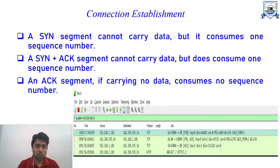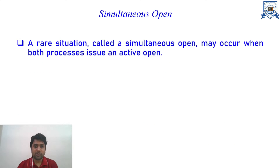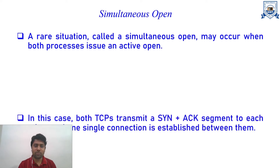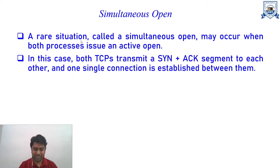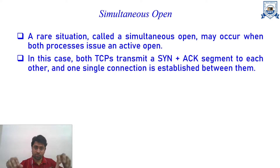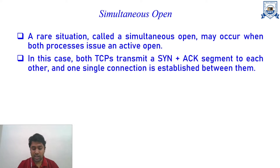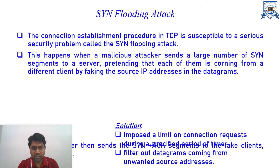There are some problems with three-way handshaking. First, if both parties simultaneously open a connection with each other, there will be only one active open — a rare but possible situation. In this case, both TCP entities transmit SYN+ACK segments to each other and only one single connection is established. Another well-known problem is the denial-of-service (DoS) attack, specifically the SYN flooding attack.